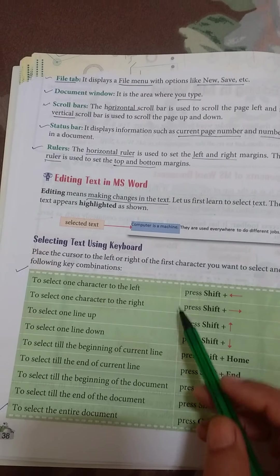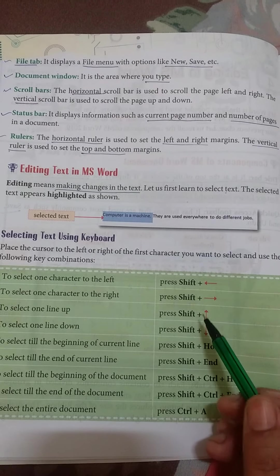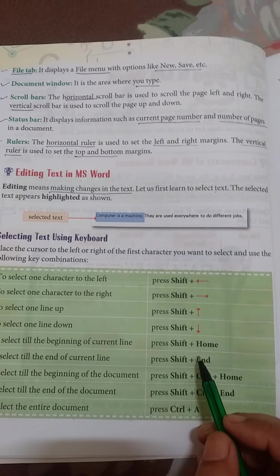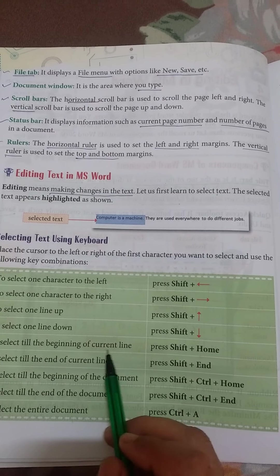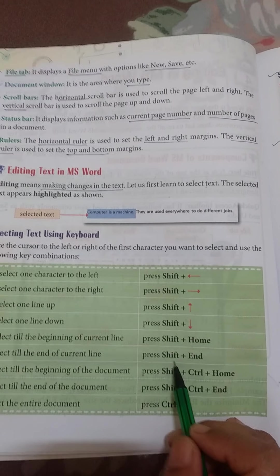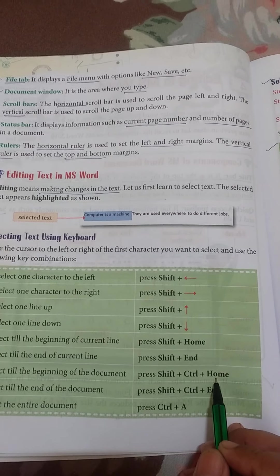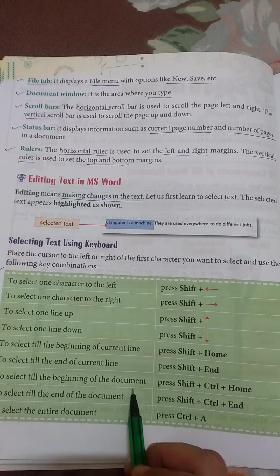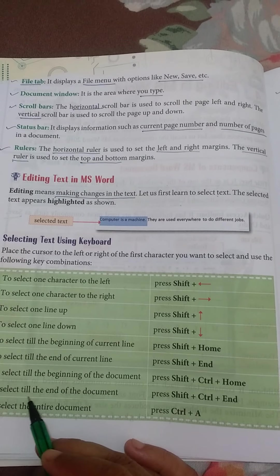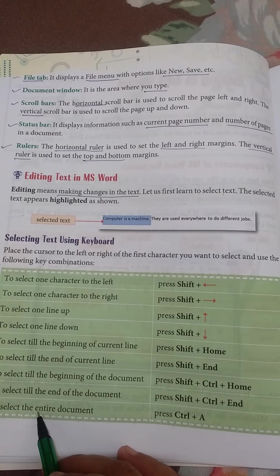Here are a few commands, how we can use them with the help of keyboard. With the help of shift button we can use many commands. Pressing shift and home we can go to the beginning of current line. Pressing shift and end we can go to end of the current line. Shift, control and home selects till the beginning of the document. Shift, control and end selects till the end of the document. Control A selects the whole document.